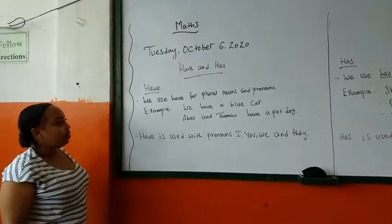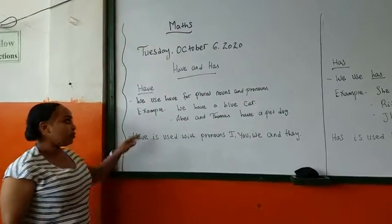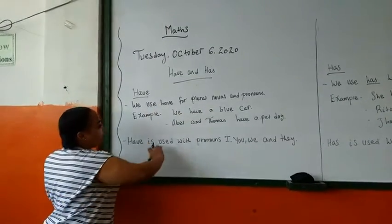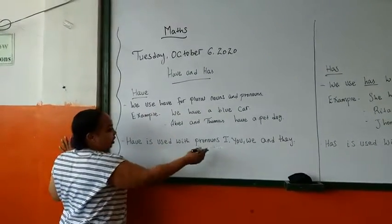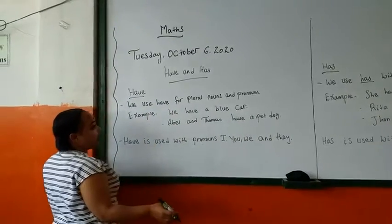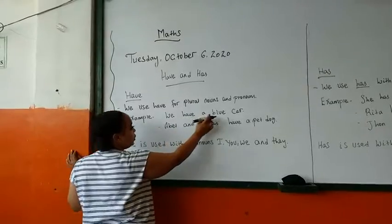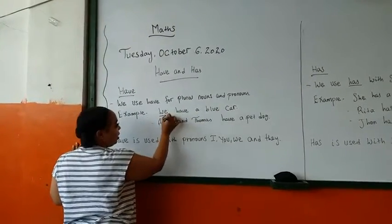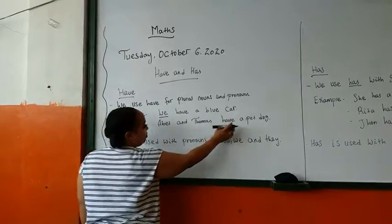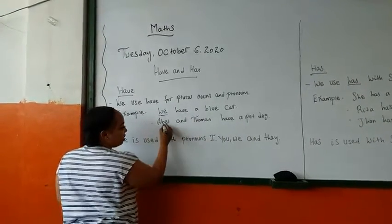We use 'have' for plural nouns or pronouns. Plural means more than one. The pronouns are I, you, we, and they. For example: 'We have a blue cow.' 'We' is a pronoun. 'Avel and Thomas have a pet dog.' Avel and Thomas are more than one person.